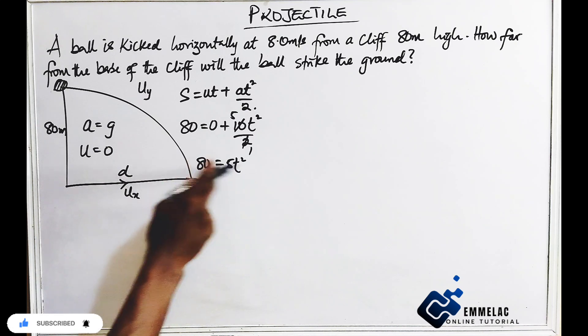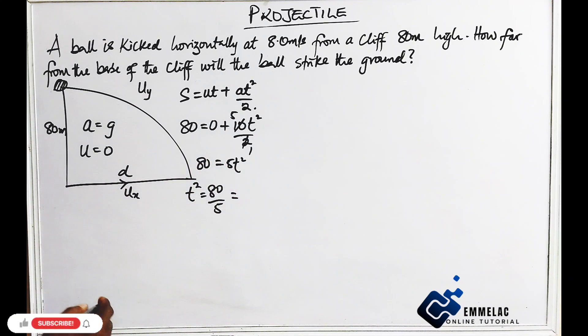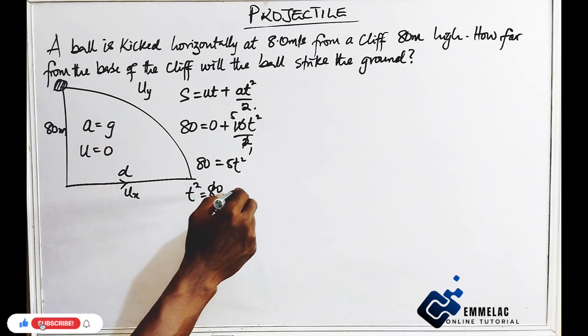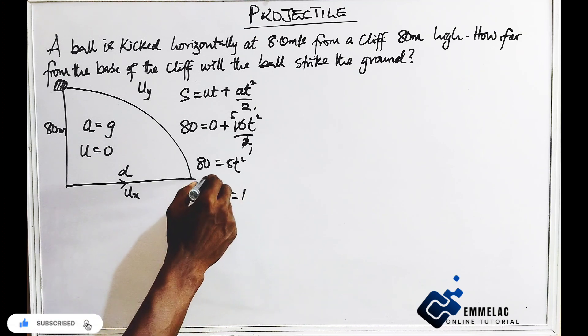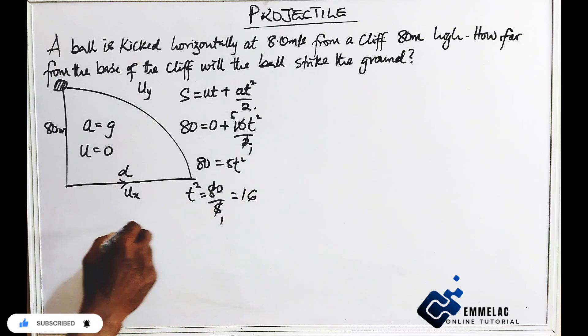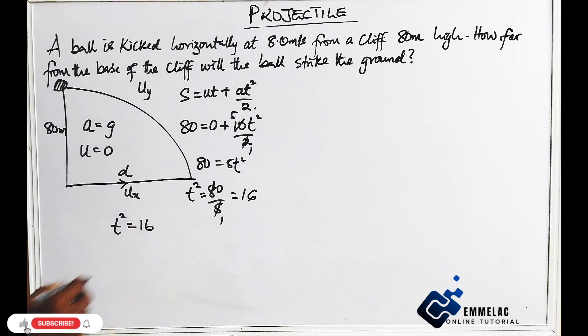If we have to divide 5 by both sides, so here we have 80 divided by 5. This gives us 5 into 1, that would be 16. Then 16. So our t squared equals to 16.